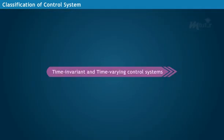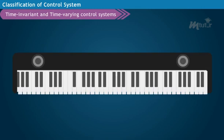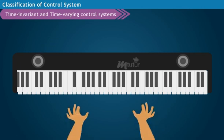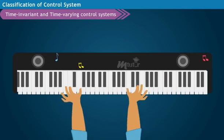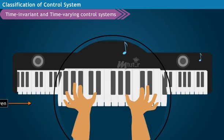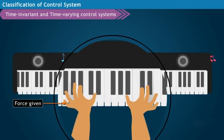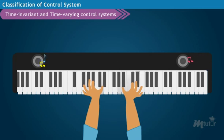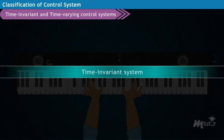Time-invariant and time-varying control systems. To understand the time-invariant system, let us consider a musical keyboard. Here, the loudness of the played note is proportional to the force given to the keyboard, which doesn't change with time. Hence, the system is called the time-invariant system.